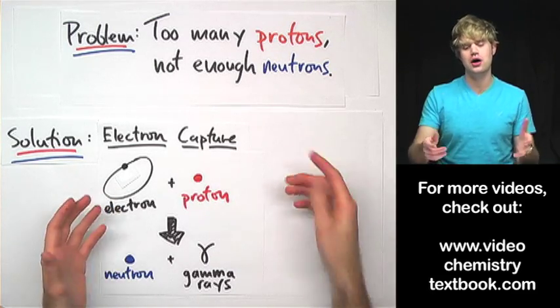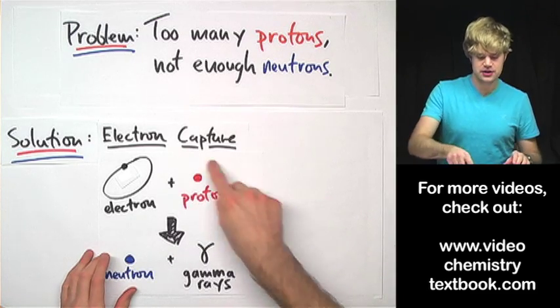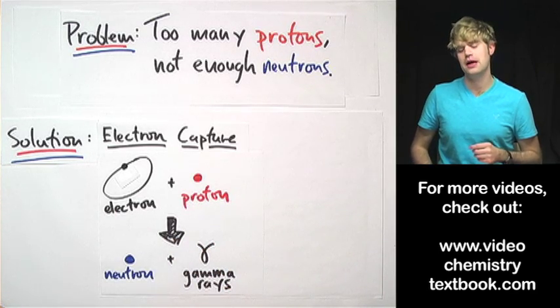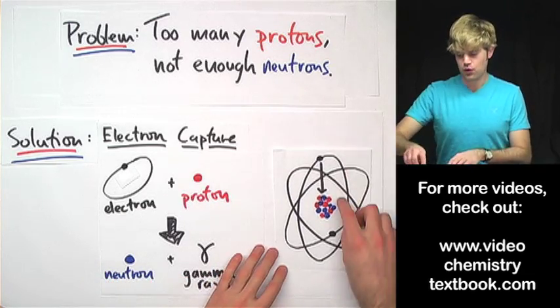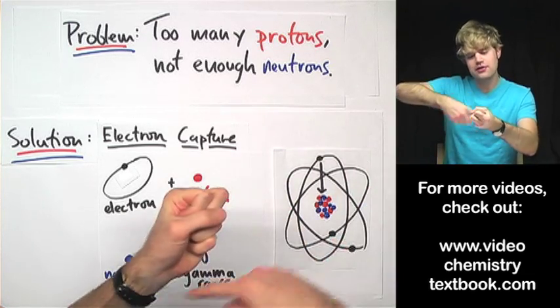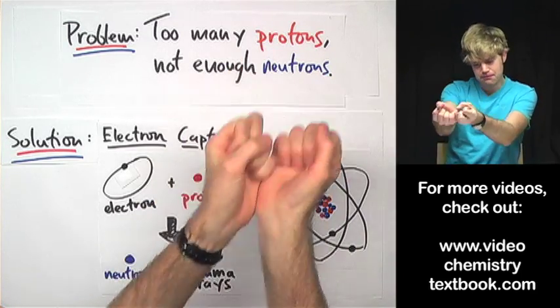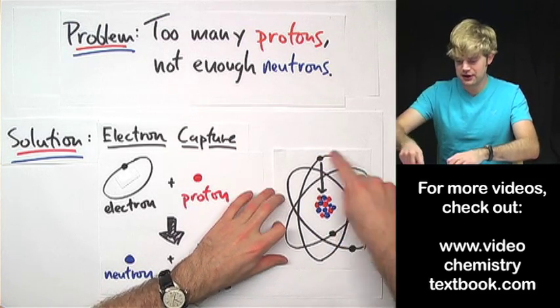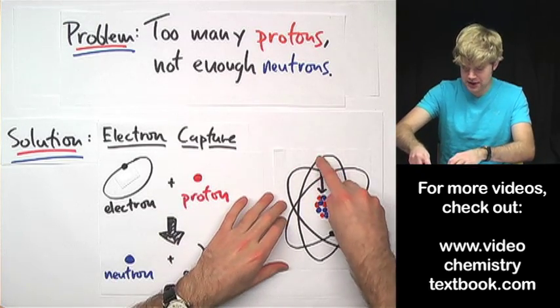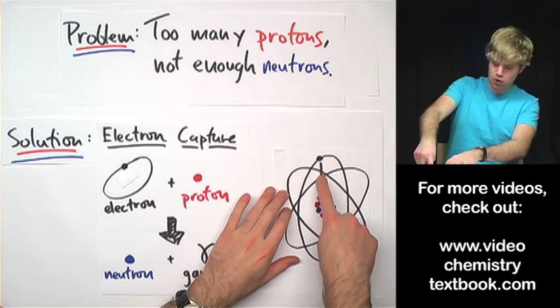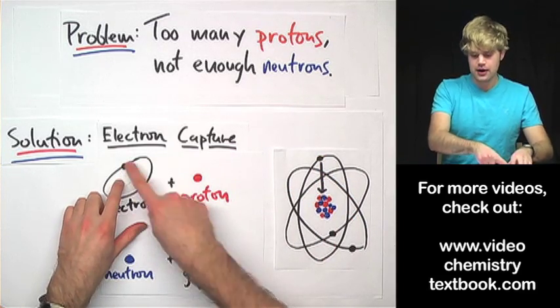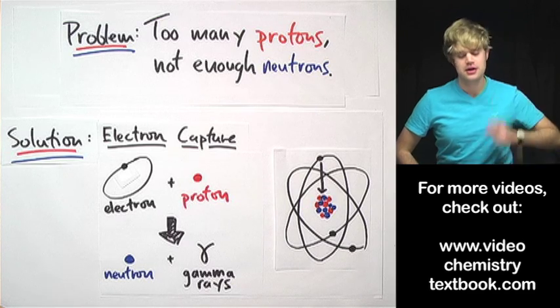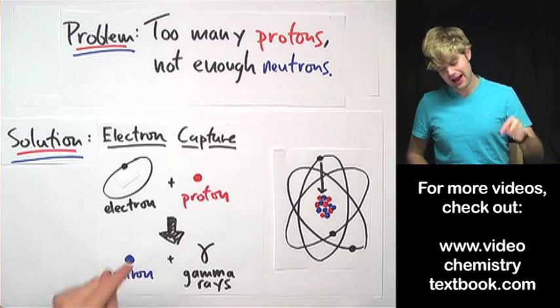So you have too many protons in the nucleus. You want more neutrons. Wouldn't it be great if you could take a proton and turn it into a neutron? That is exactly what happens in electron capture. In order to do this, an atom's nucleus takes one of the electrons that's in an orbital around the nucleus and pulls that electron in. So here's our atom, here's a nucleus, and these dots here represent the electrons and the lines show that they're in motion. So we have one of these electrons in an orbital here, it gets pulled into the nucleus. This electron comes together with a proton and that makes a neutron. It turns the proton into a neutron. Something else gets made too when a proton gets turned into a neutron, and that's gamma rays.